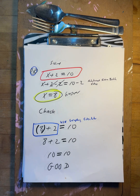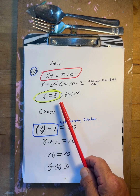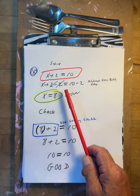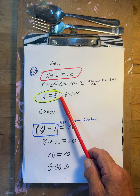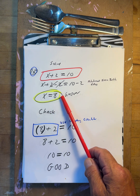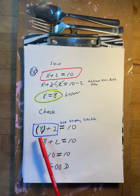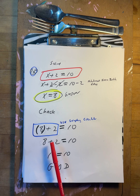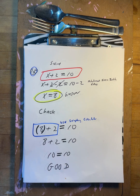x plus two equals ten. Minus two, minus two. So x equals eight. Put it back in: eight plus two is ten. They match. Good.